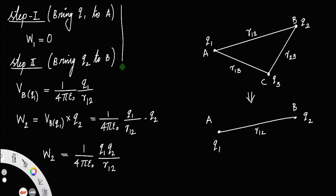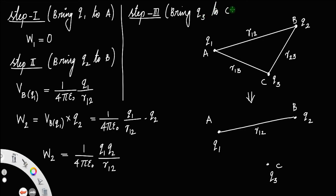For step 3, bring the third charge q3 to the point C. In order to bring q3 to point C, we have to confront both charges q1 and q2. Remember, all the charges are brought from infinity — always remember that fact, because the charge is brought from infinity only then can we find the potential energy. So q3 is brought from infinity to point C, confronting q1 and q2.